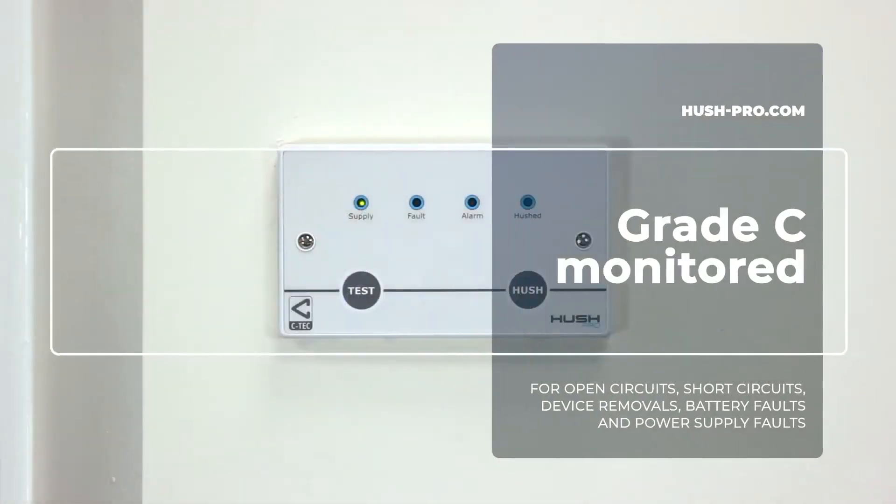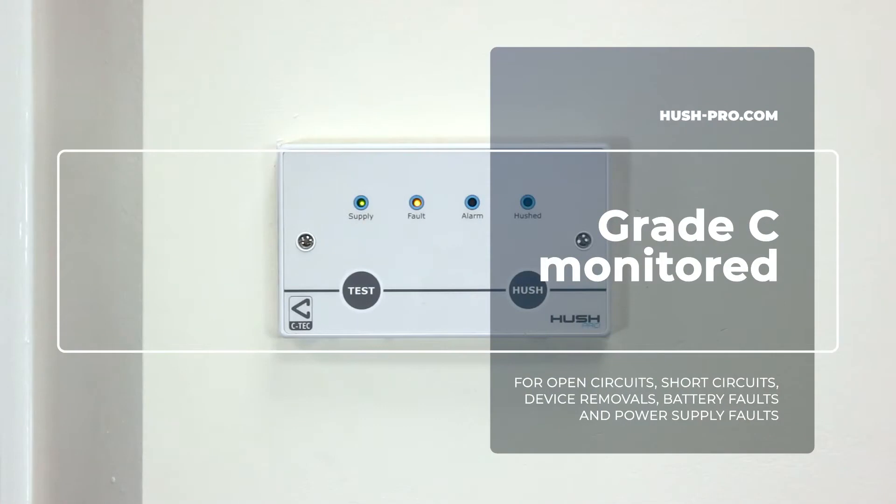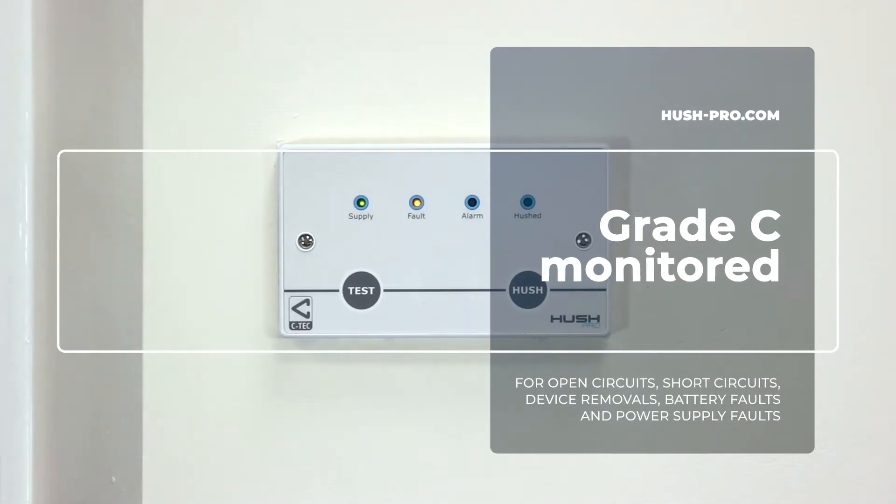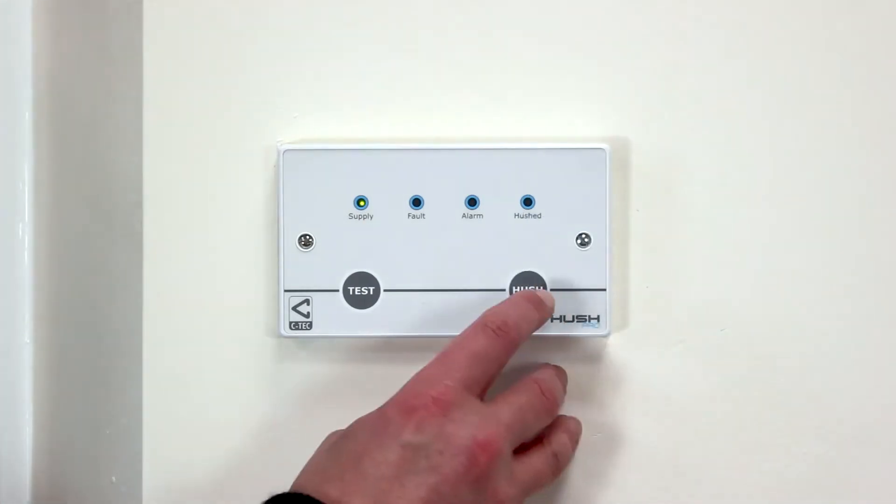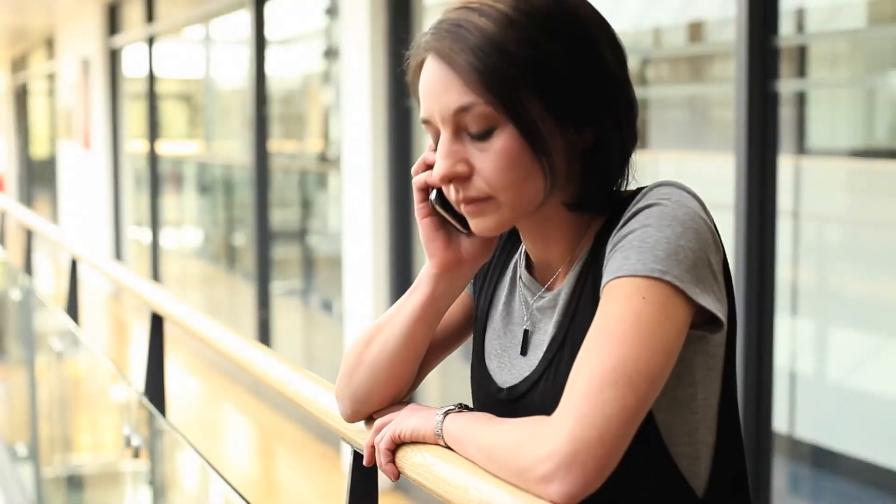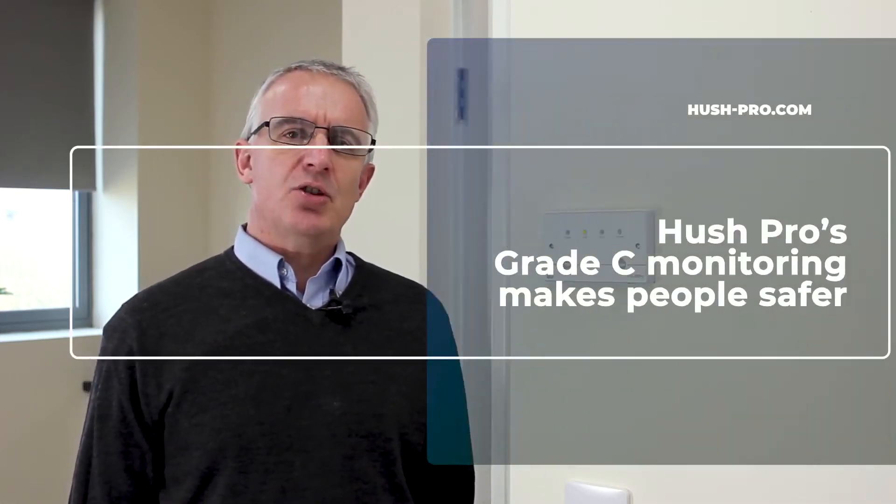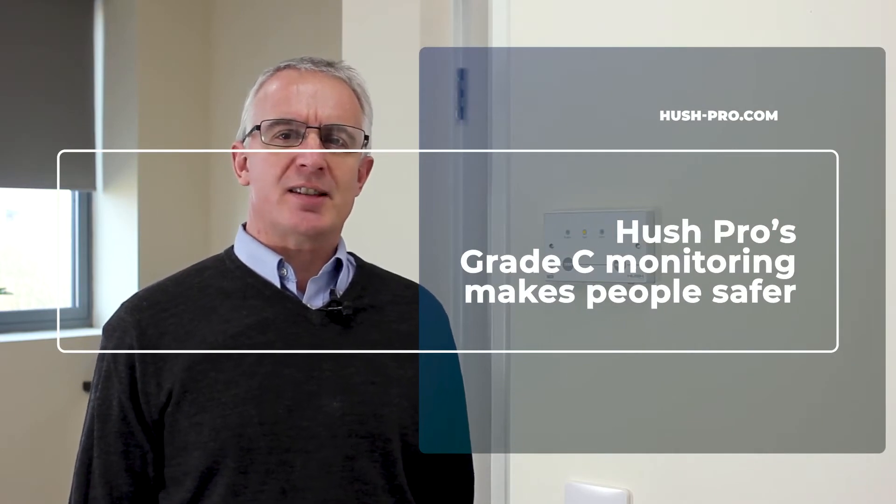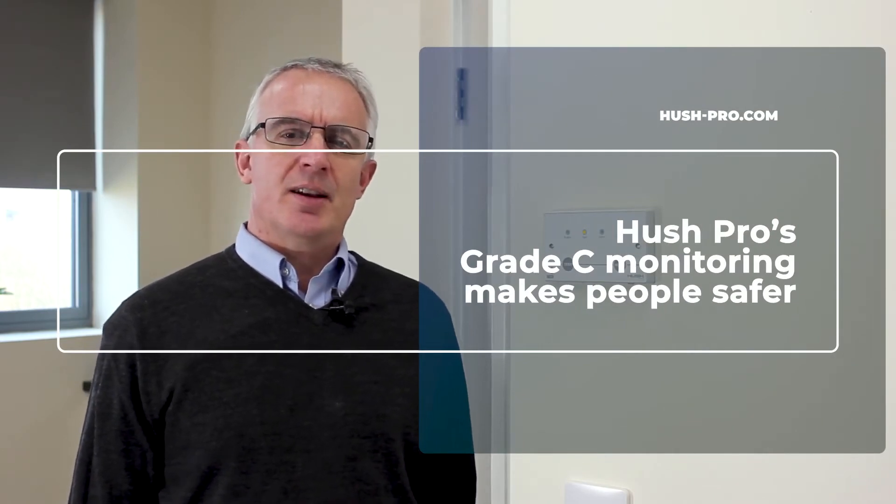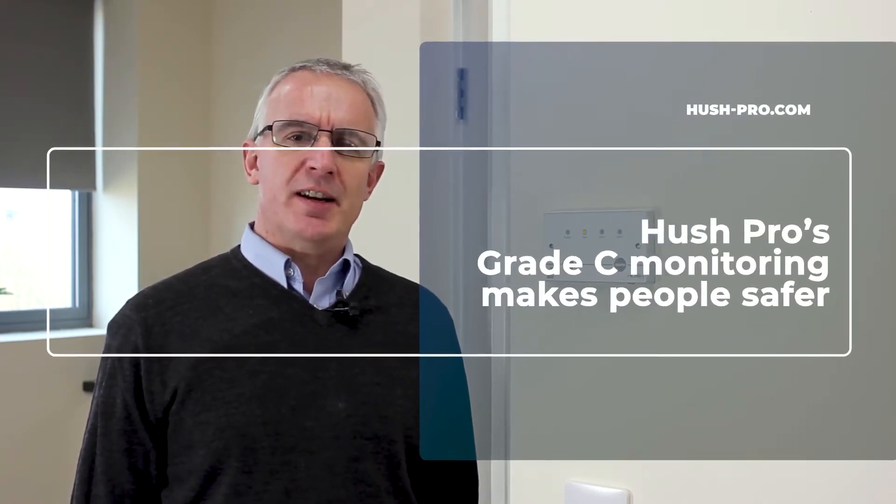Such a fault is brought to the attention of the occupant by a buzzer sounding. The occupant can then come along and press Hush to silence the fault for 24 hours. The idea being they contact their landlord and ask them to fix the fault. If the fault is not fixed, in another 24 hours the buzzer will sound again to ensure the fault is not forgotten about. This ensures the building occupant is aware that their system may be compromised. This level of fault monitoring is not needed or provided on many lower grade systems.